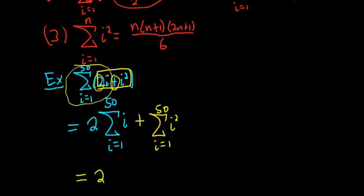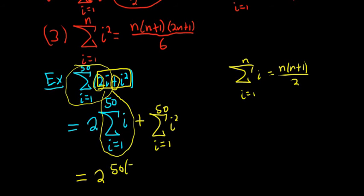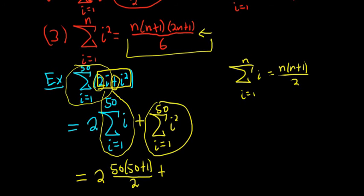And so now we just use the formulas. So it's 2 times, this first piece is the formula, n times n plus 1 over 2. So in this case our n is 50. So it's just 50 times 50 plus 1 all over 2 plus. The other formula is for i squared, so it's 50 times 50 plus 1 times 2 times 50 plus 1 all over 6.